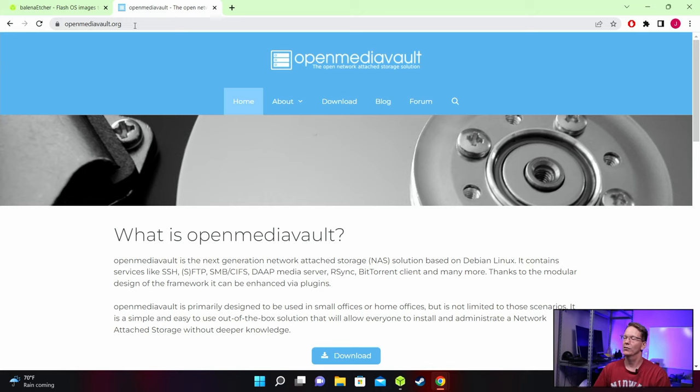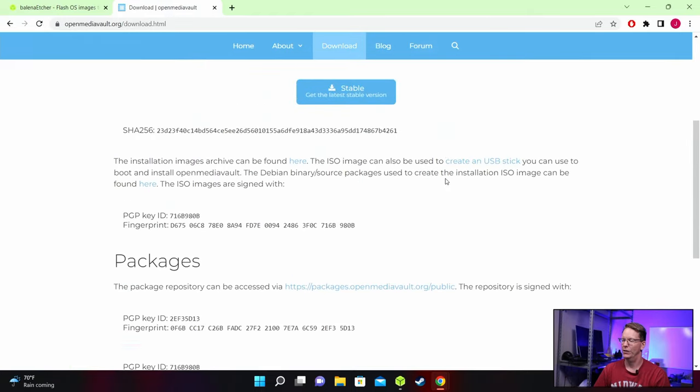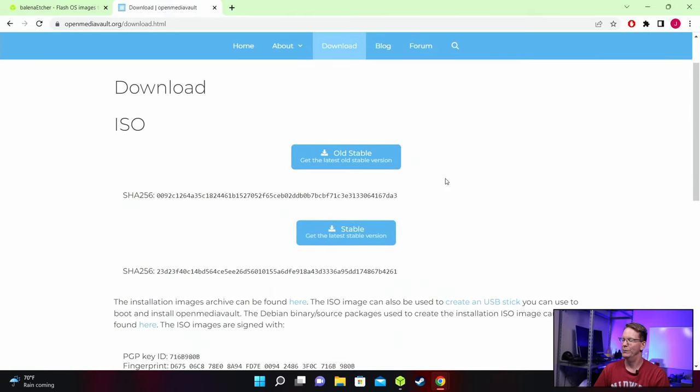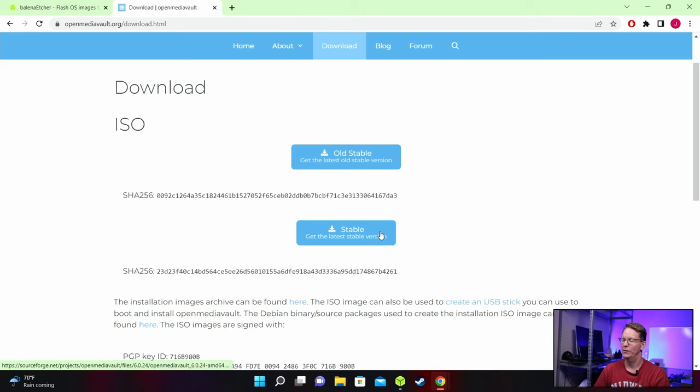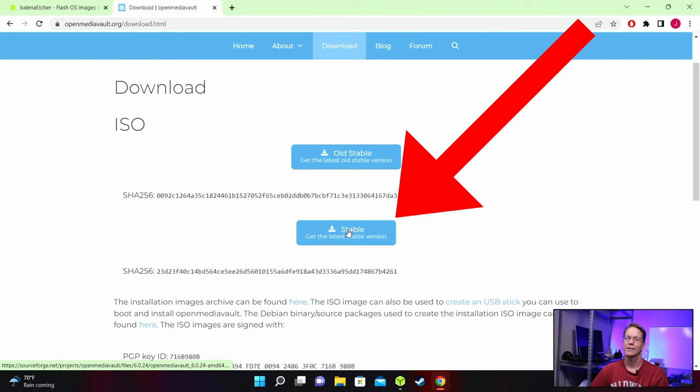Next, we want to go to OpenMediaVault.org, go to the Download section. Currently, if we look, there's two options here. We have Old Stable and Stable. Old Stable currently is OMV5, and Stable is OMV6. We want to press on Stable, and then download that.